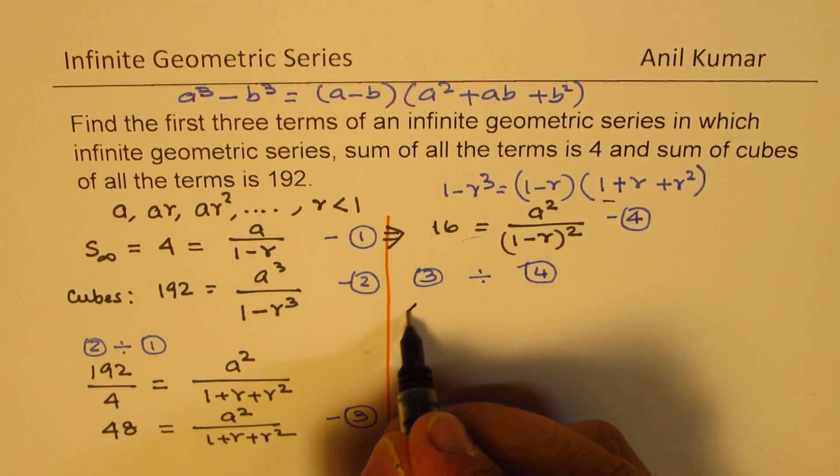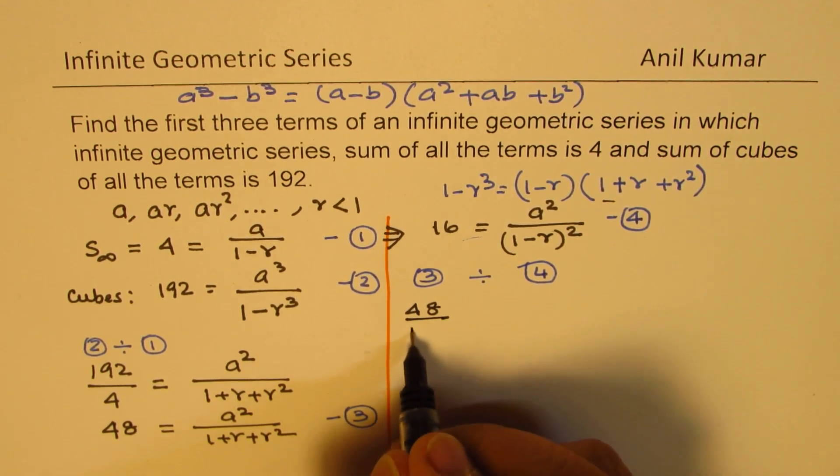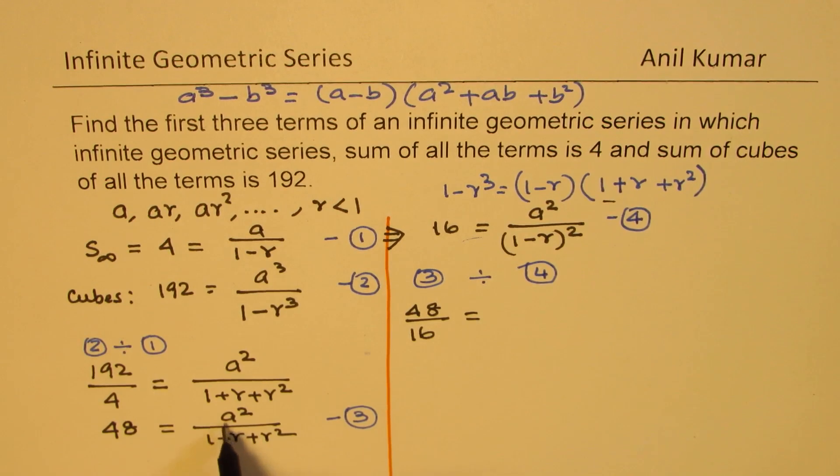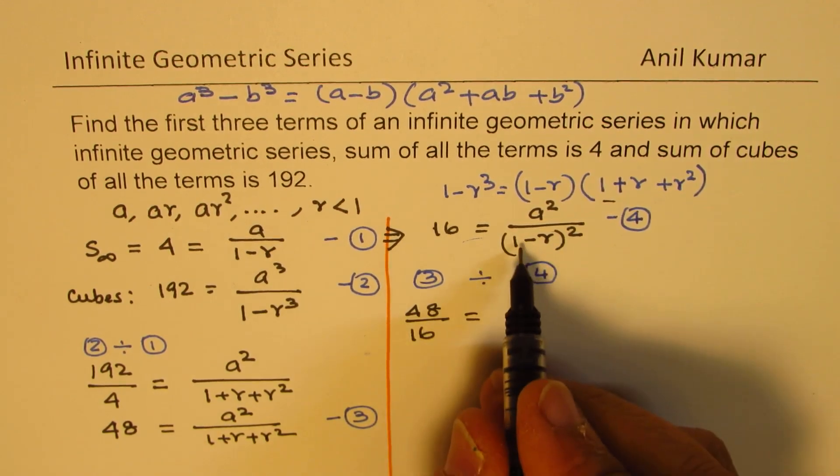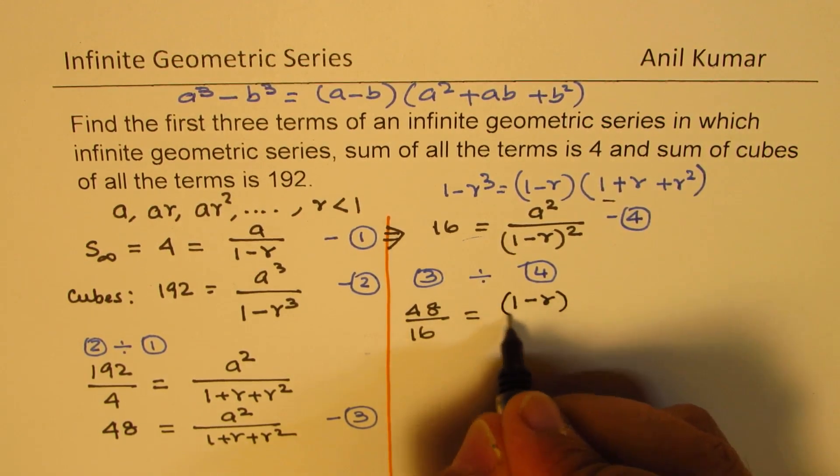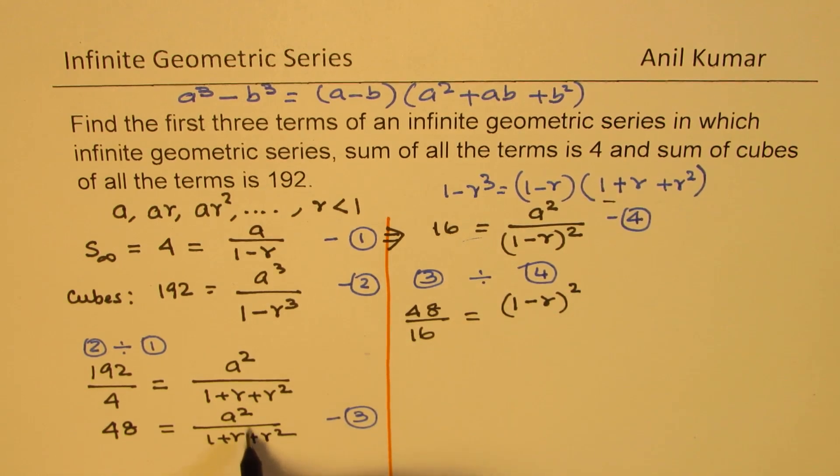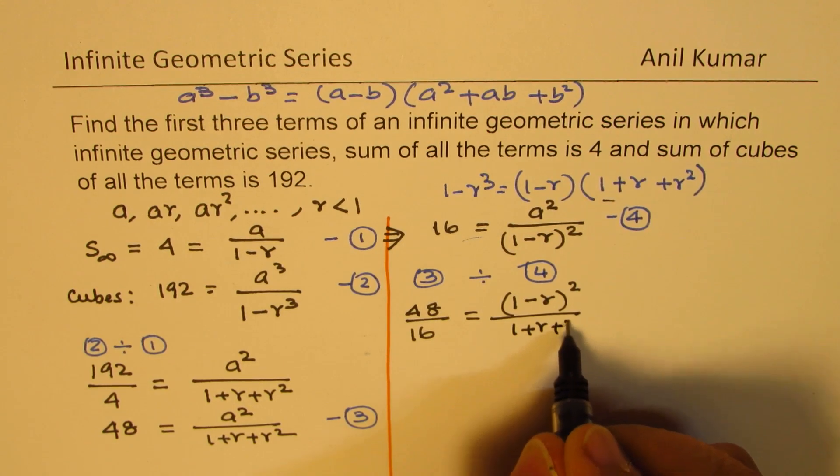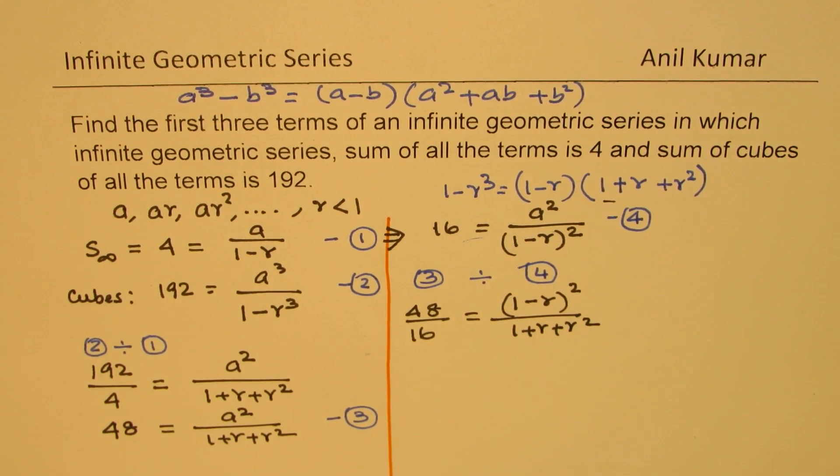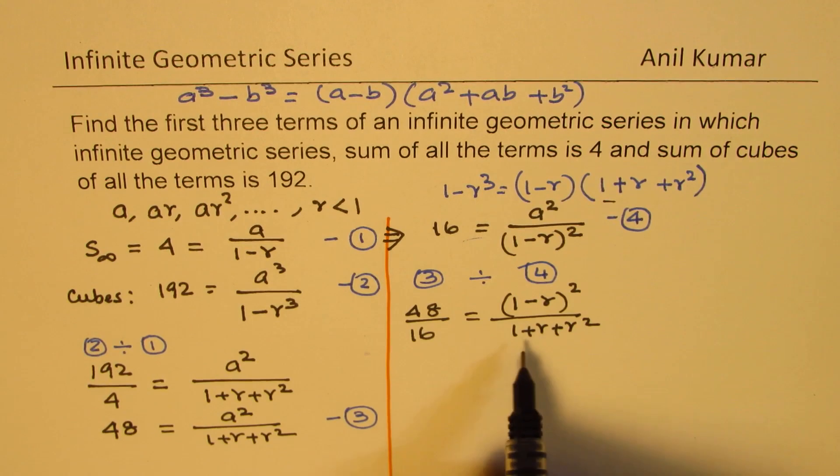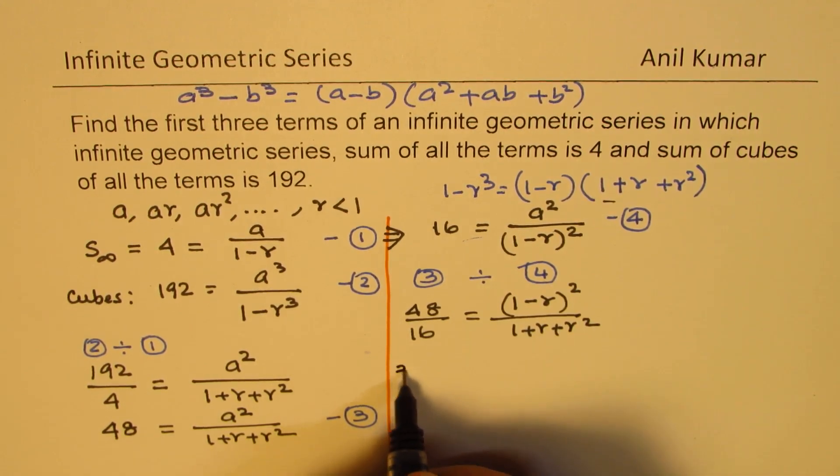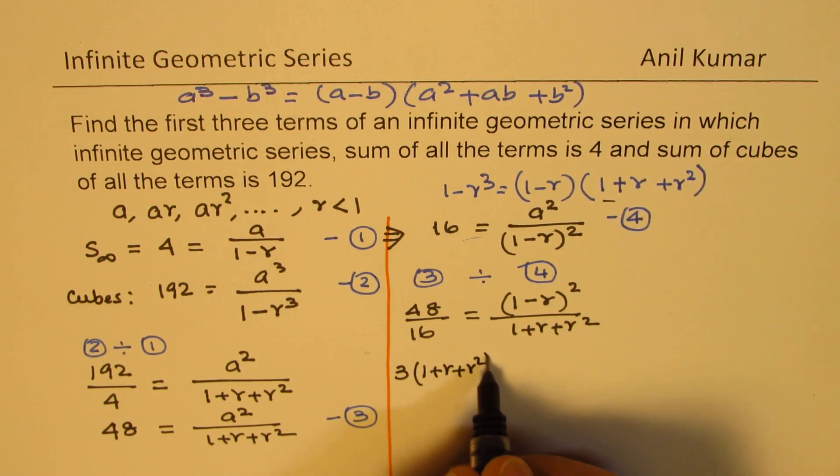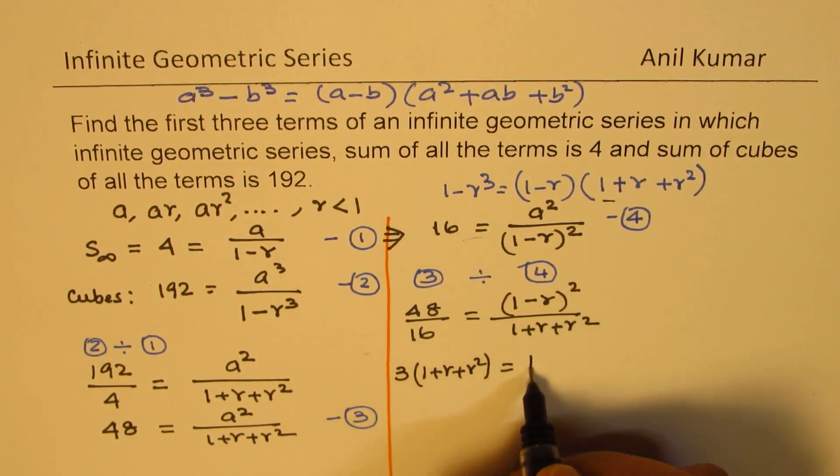We get 48 over 16 equals to A square, A square cancel. We get this in the numerator, 1 minus R whole square, all this in the denominator, 1 plus R plus R square. This is 3 and we can now cross multiply. So we get 3 times 1 plus R plus R square equals to 1 minus 2R plus R square.